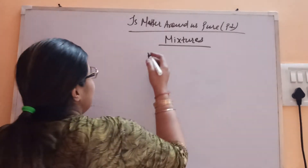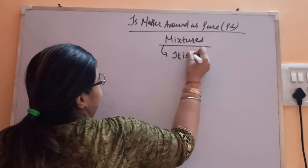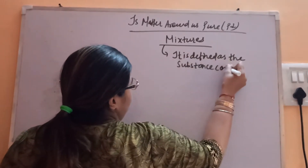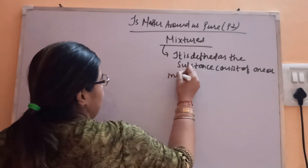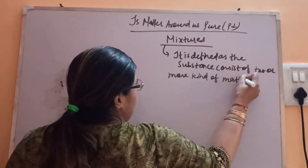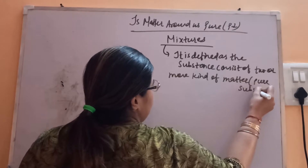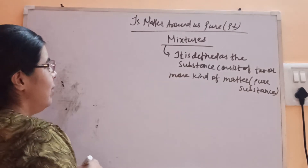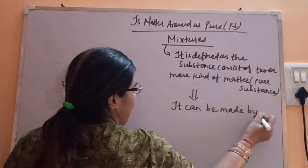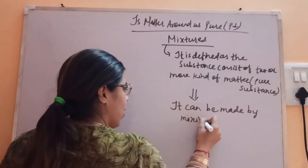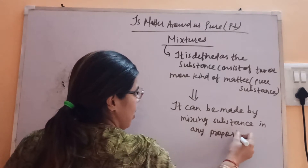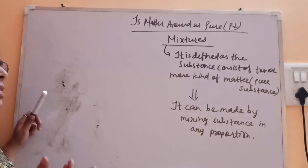So a mixture is defined as a substance consisting of two or more kinds of matter or pure substances. This mixture can be made by mixing substances in any proportion — the proportion is not fixed. We don't have to calculate a specific composition. You can take solid and mix into liquid, liquid into gas, gas into another gas, and so on.